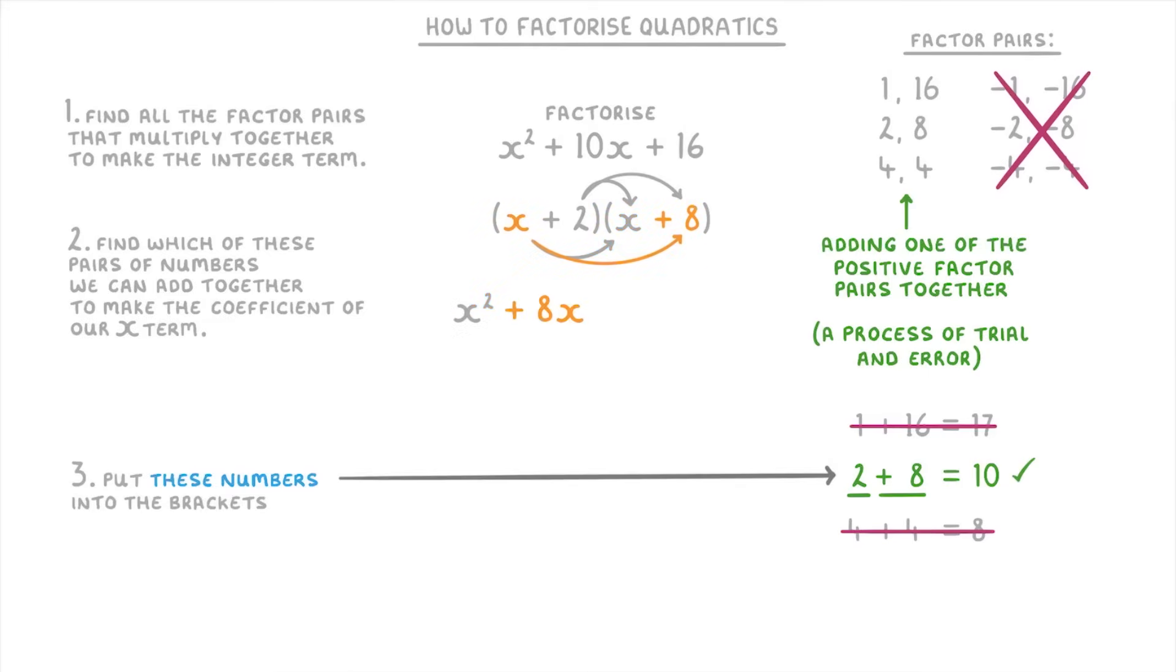x times 8 which is 8x, 2 times x which is 2x, and 2 times 8 which is 16. Then if we collect the like terms we get x squared plus 10x plus 16, which is the same as our original quadratic, so we can be sure that we did everything correctly.